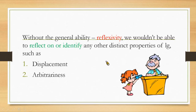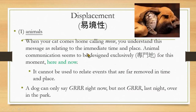Without this kind of ability, we wouldn't be able to reflect on or identify any other distinct properties of language, such as displacement. Now, what's displacement? Let's talk about animals as an example. When your cat comes home calling 'meow,' you understand this message as relating to the immediate time and place.